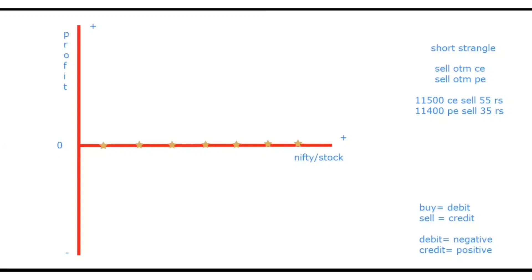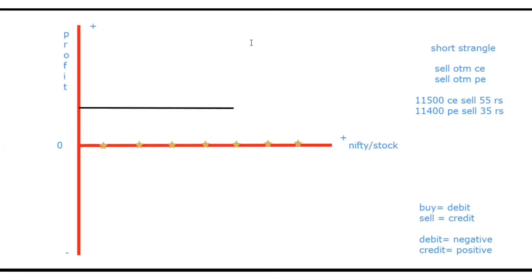So now we will make the payoff graph of the 11,500 call sell. Sell matlab credit, credit ke upar positive, positive zero ke upar aayega. We are selling a call option, so market jitna upar jayega — jitna right side jayega — utna apan ko loss honne waala hai. Because we are selling a call option; market right side gaya to call option mein apan ko loss hoga, kyunki call option ki value badh jayegi. To graph aisa banega.